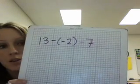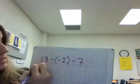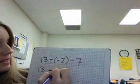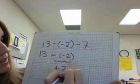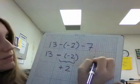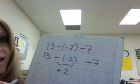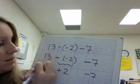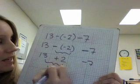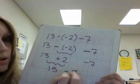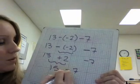13 minus negative 2 minus 7. Remember all of the minuses are the opposite. So I have 13 and then I want the opposite of negative 2. The opposite of negative 2 would be positive 2. Then here I have a 7 but here I have a minus. I need the opposite of 7 is negative 7. So I have 13 plus 2 is 15 and 15 and negative 7 or 15 minus 7 would be 8.